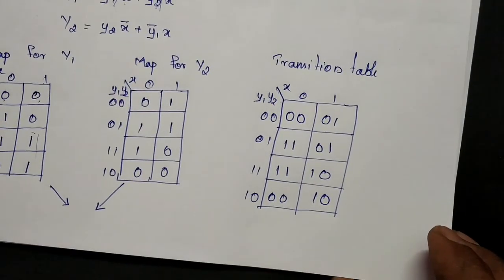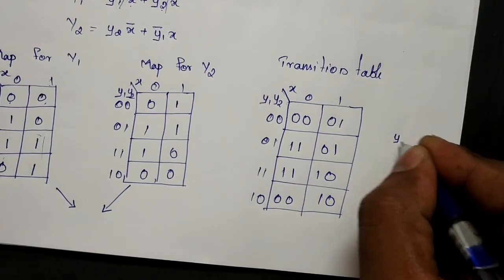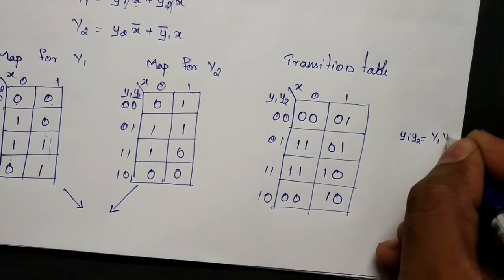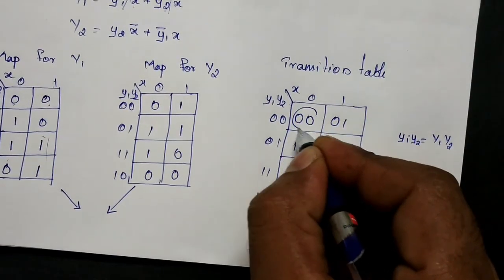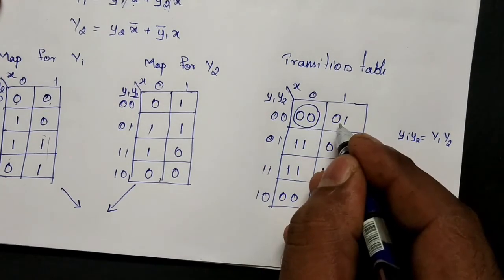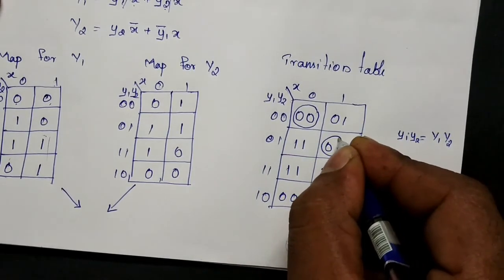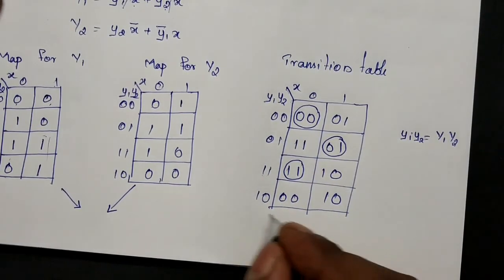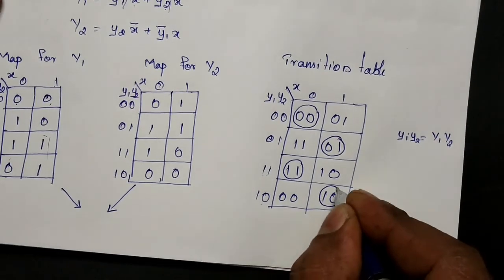Now we check for stable states. A stable state is one where the present state equals the next state. Present state 00 and next state is also 00 — stable. The next entry is not the same — not stable. Present state 01 and next state 01 — stable. Present state 11 and next state 11 — stable. Present state 10 and next state 10 — stable.